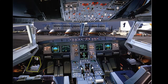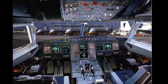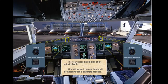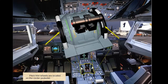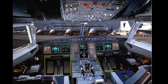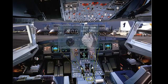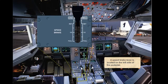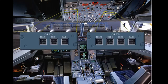Pilots control pitch and roll through two side sticks. There are associated side stick priority lights. Side sticks and priority lights will be explained in a separate module. Pitch trim wheels are located on the centre pedestal. There are two sets of conventional rudder pedals. A rudder trim panel is located on the pedestal. A speed brake lever is located on the left side of the pedestal. In addition, there are two panels located on the overhead panel to control the flight control computers.